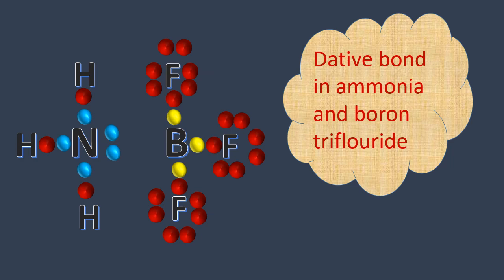After taking 1 electron from each fluorine, it is going to be 6. Now boron needs 2 more.